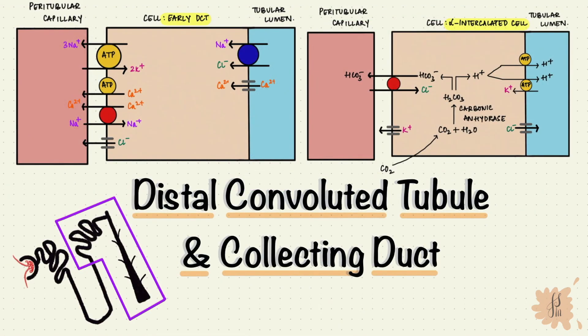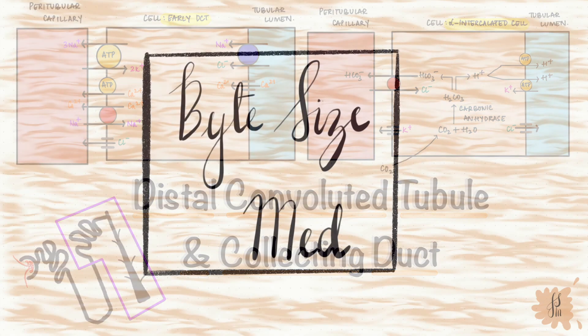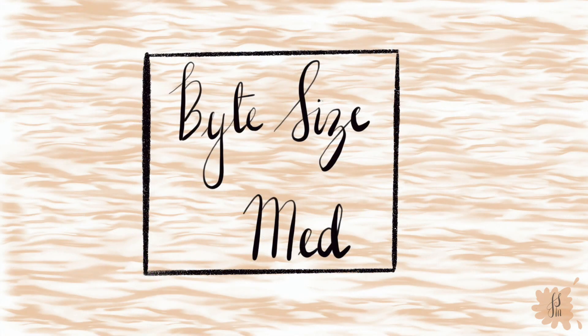And that is the distal convoluted tubule and the collecting duct. Make sure to check out my other videos on renal physiology. If you have any questions or any other topics you'd want a bite-size idea on, let me know in the comments below. I hope you found this video useful — if you did, give it a thumbs up and subscribe to my channel. Thanks for watching and I'll see you in the next one!